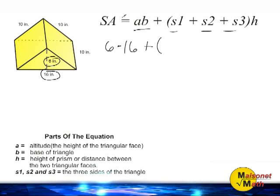So looking at the three lengths of our given triangle, we can see that one side of our triangle is 10 inches, another side is 10 inches, and the third side, which is actually the base of our triangular face, is a length of 16 inches. So in parentheses I am going to plug in 10 plus 10 plus 16.